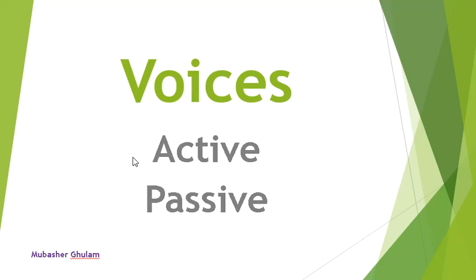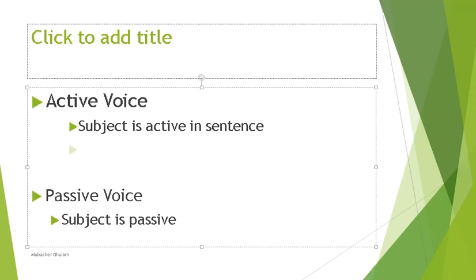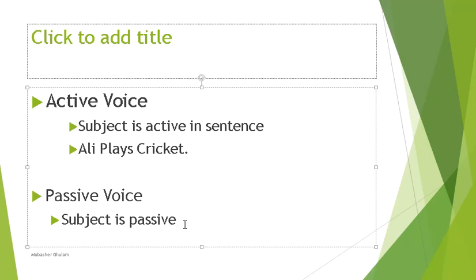Active voice is a voice where the subject is active. We have already discussed that the subject is the doer of an action. When we are talking about a sentence and the subject is active in that sentence, then it is active voice. For example: 'Ali plays cricket.' Who is performing the action? Ali. And Ali is at the initial position of the sentence, so Ali is quite active here.